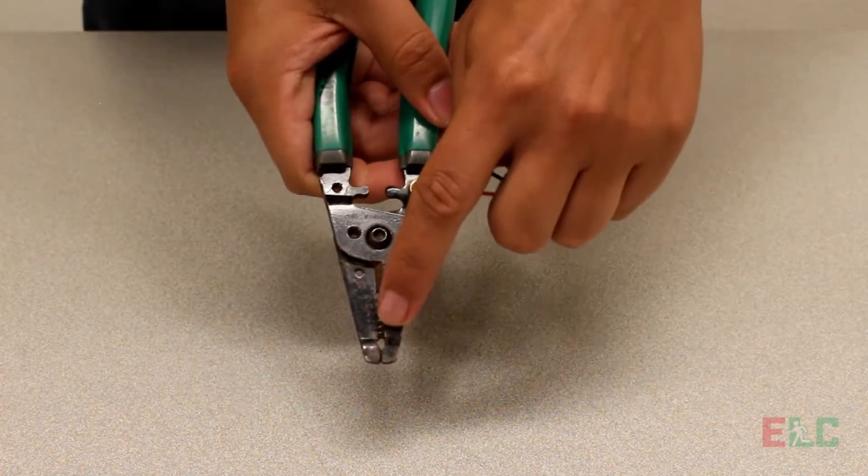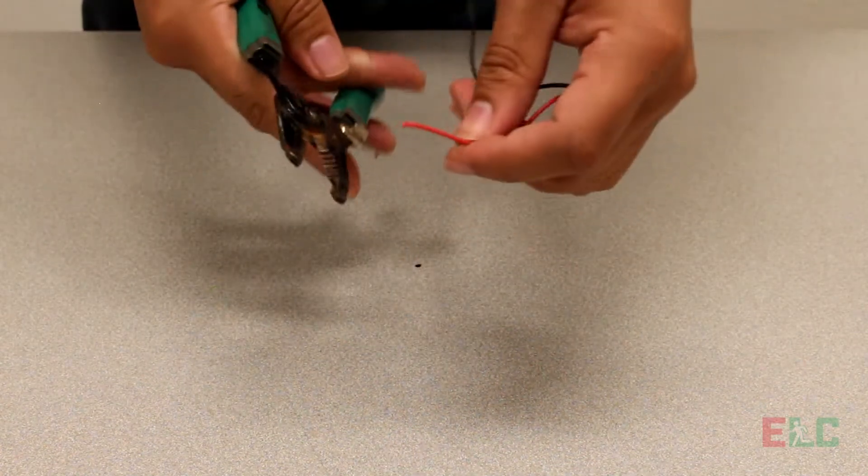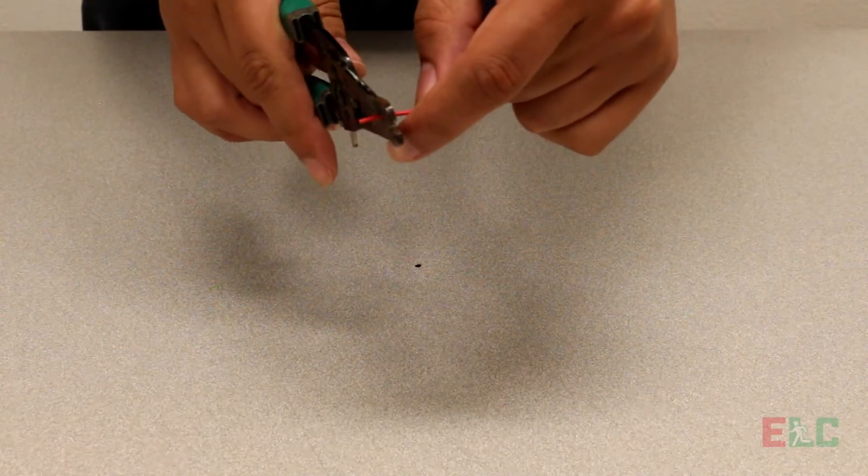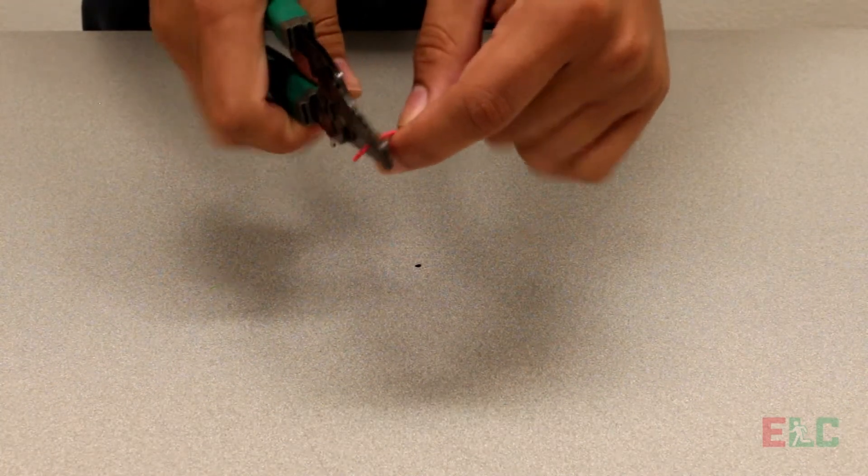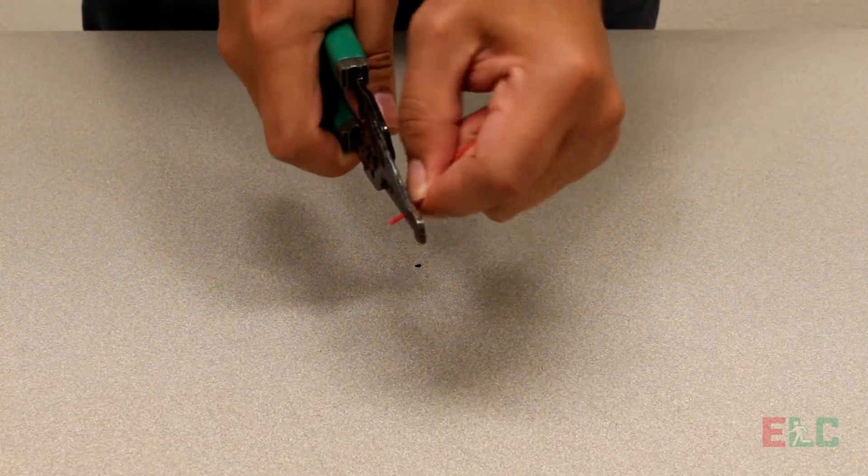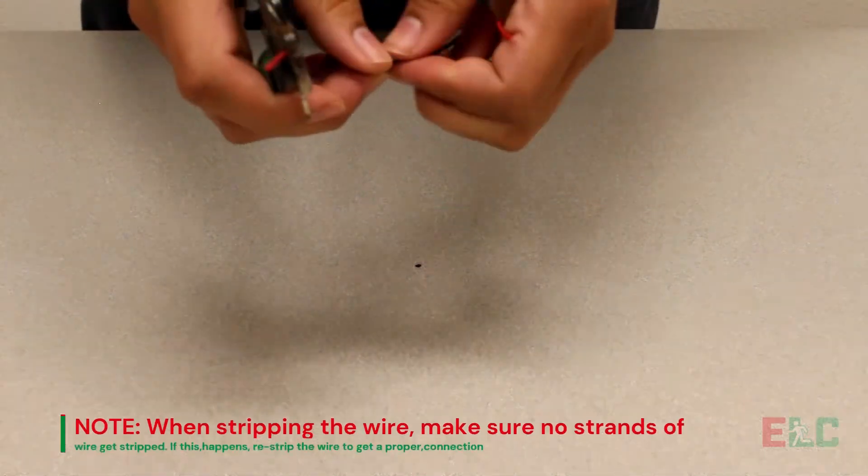The wire stripper has different wire gauge settings. In this case, we'll be using the 22 gauge wire slot to properly strip the wires. Repeat the step for both red and black wires.